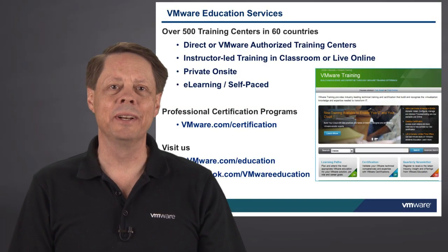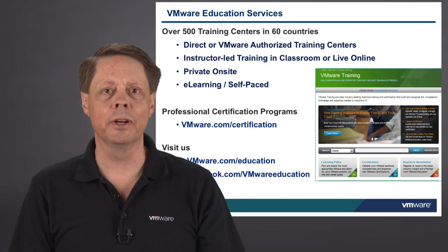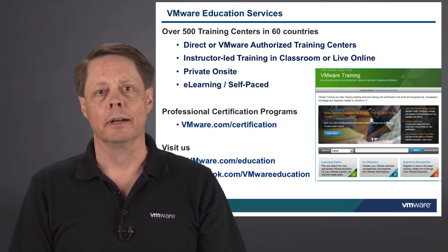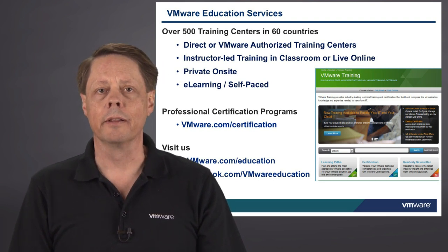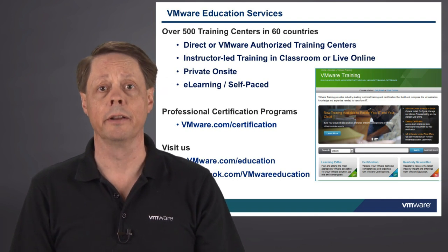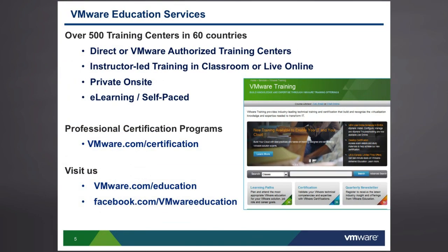Now that we've completed the inventory mappings and configured some virtual machines for protection via vSphere replication, we can start to look at the next steps. The next step for you might be to consider getting more training on SRM. Go to vmware.com/education, search for 'SRM 5 Install Configure Manage,' and that'll be the class that gives you all of the hands-on training necessary to deploy this in your own organization. Thank you.